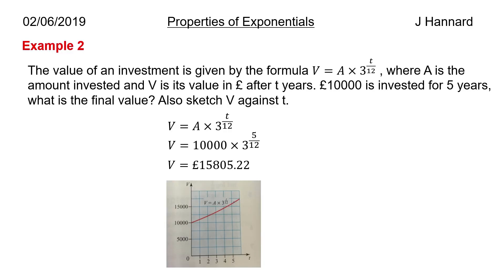For the sketch of V against T: it starts at 10,000 because that's your initial investment and it's going to go up. You could draw a little exponential curve going up like the ones we saw before — rapidly increasing. For this 5-year time span you won't see a massive curve, but calculate values at 1, 2, 3, 4, and 5 years, plot the points, and join them in a nice smooth curve.